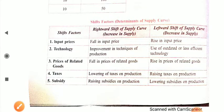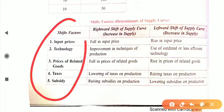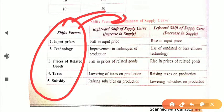These are the basic shift factors and their impact — whether they cause an increase or decrease in supply. Technology, tax rate, and subsidies are key determinants: good technology and low taxes increase supply; bad technology and high taxes decrease supply.